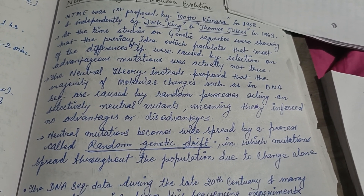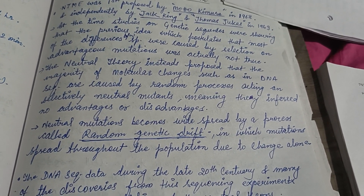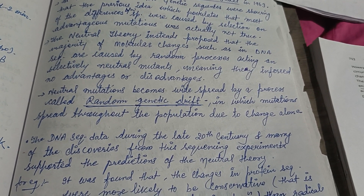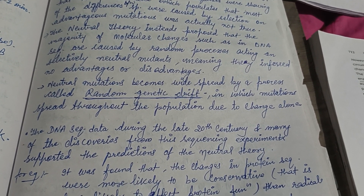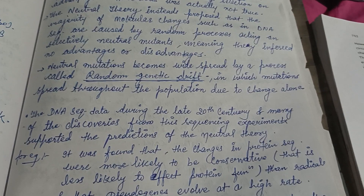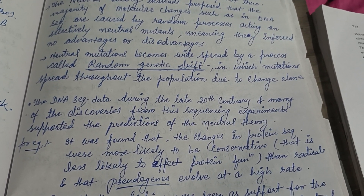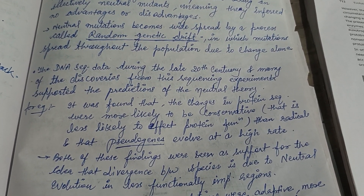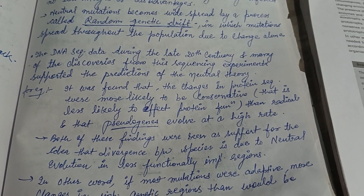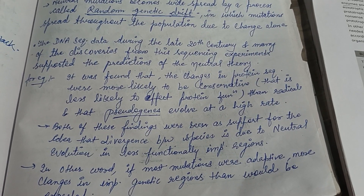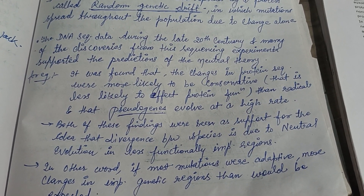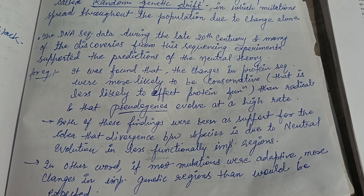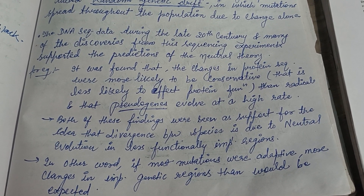The Neutral Theory proposed that the majority of molecular changes, such as in DNA sequences, are caused by random processes acting on selectively neutral mutants, meaning they confer no advantages or disadvantages. For example, it was found that changes in protein sequences were more likely to be conservative — that is, less likely to affect protein function — and that synonymous sites evolve at a higher rate.